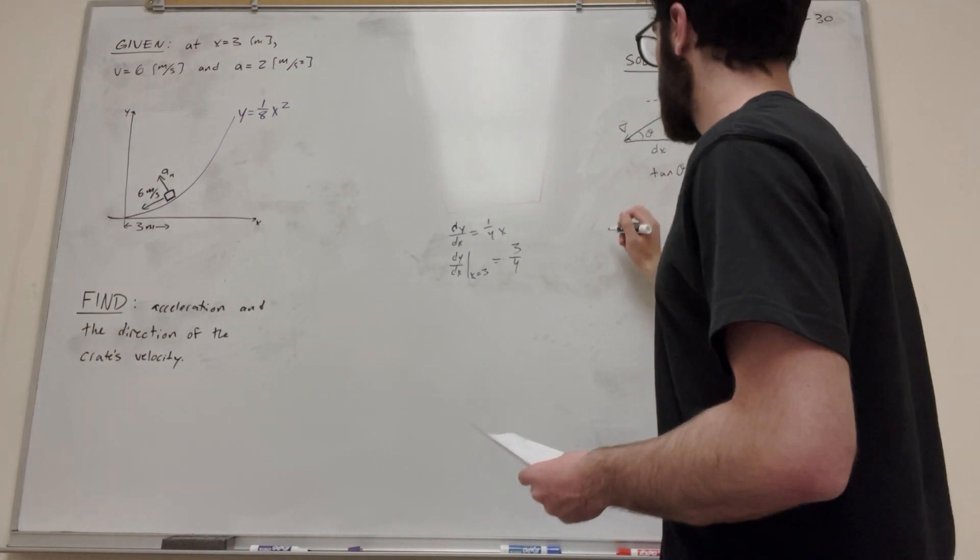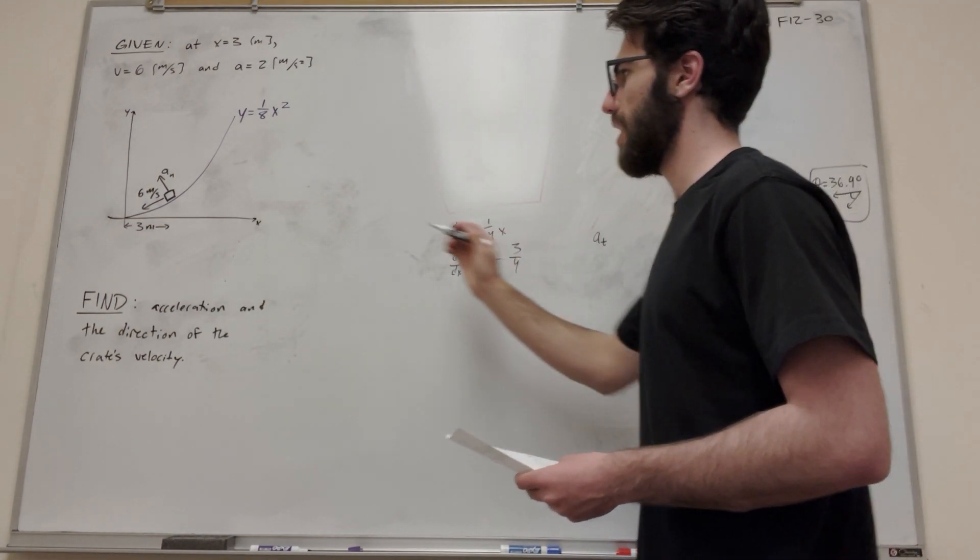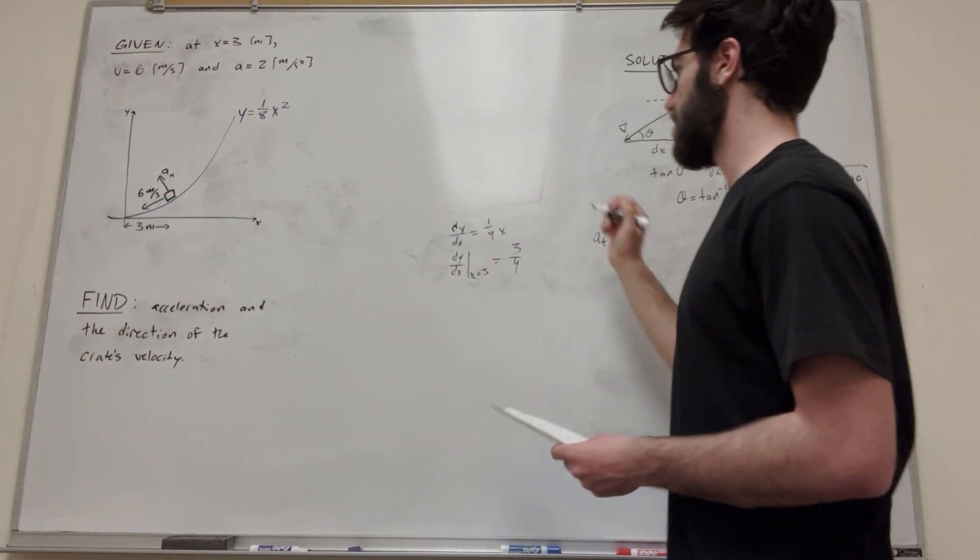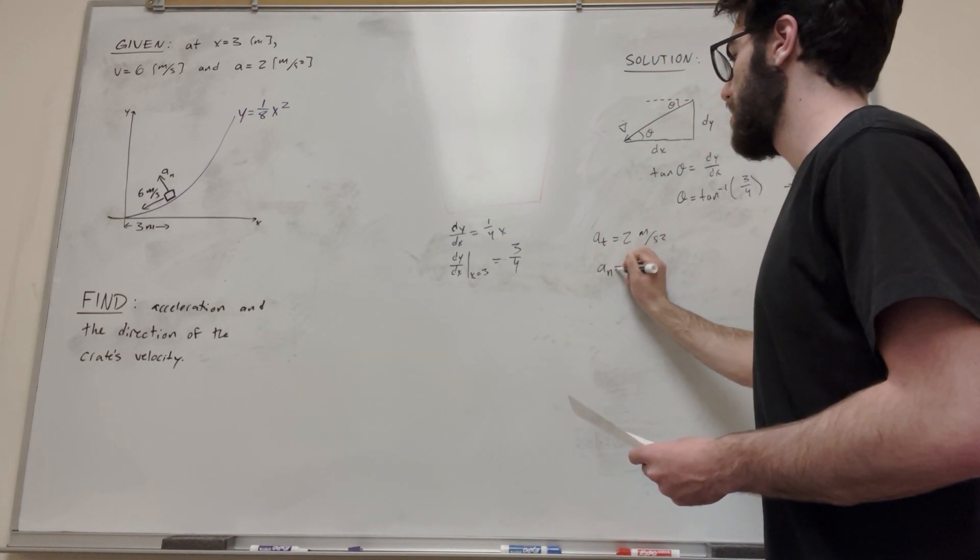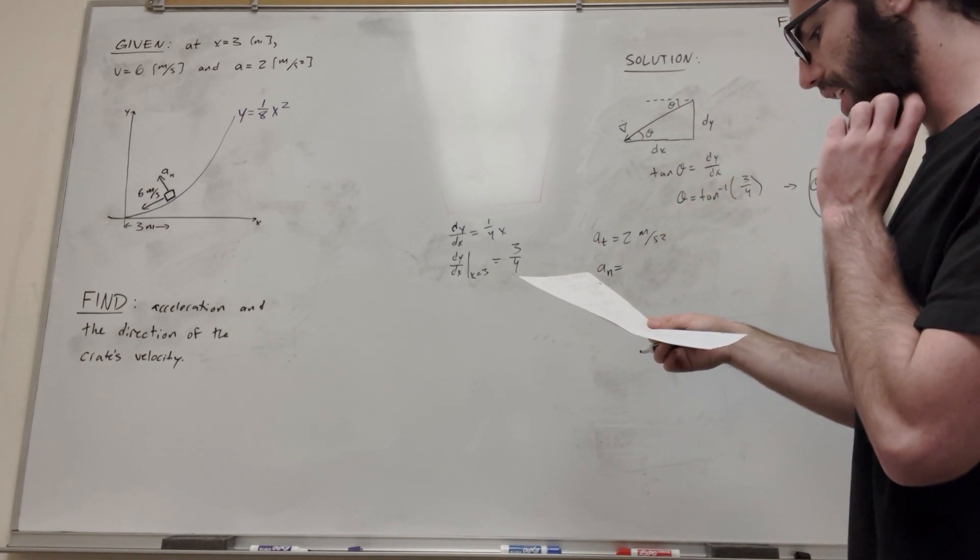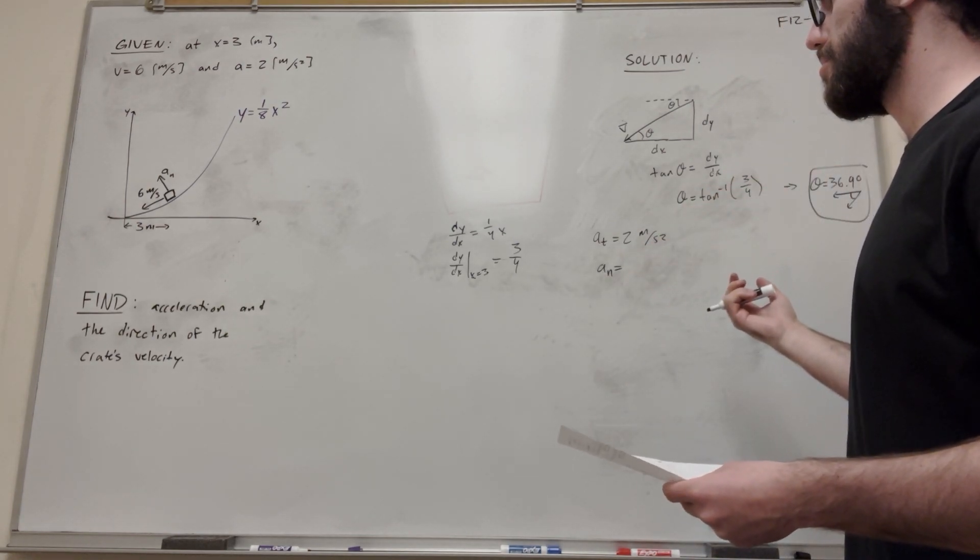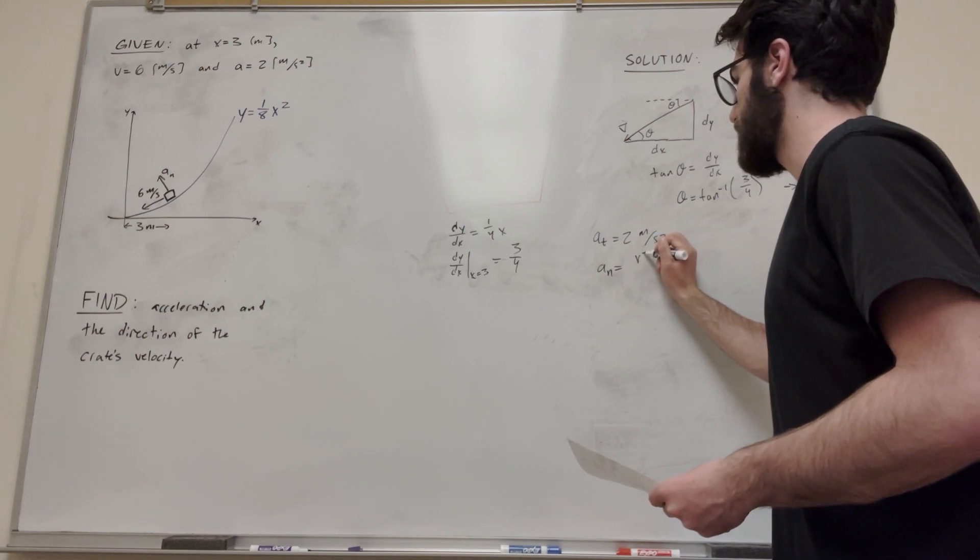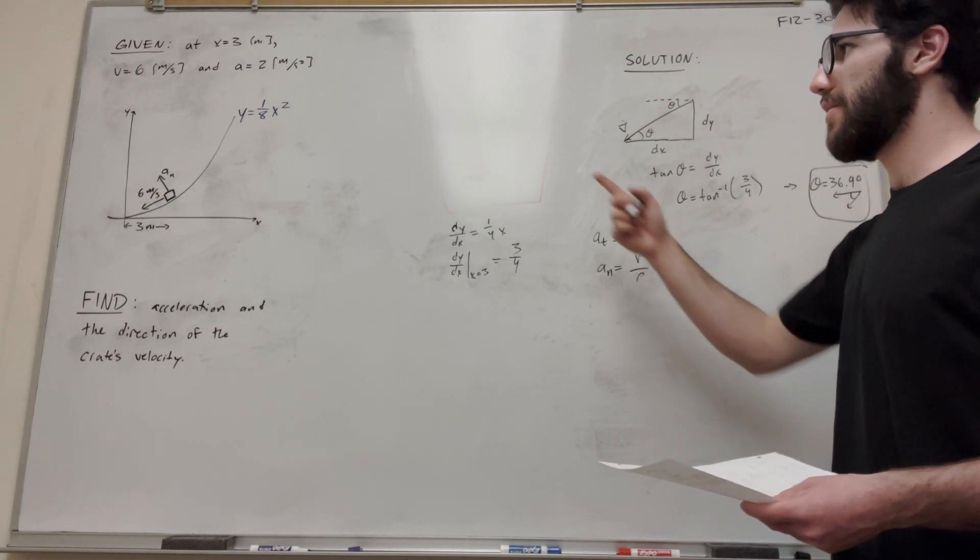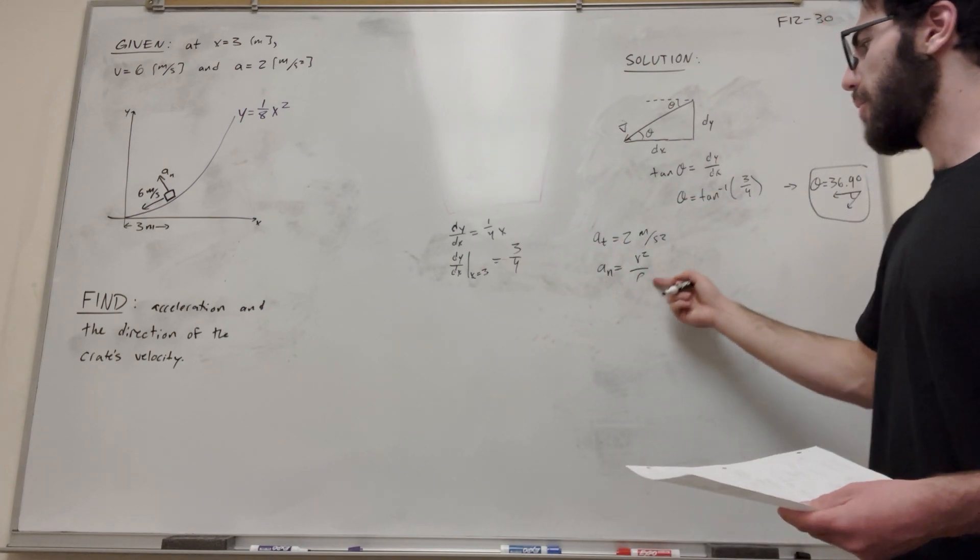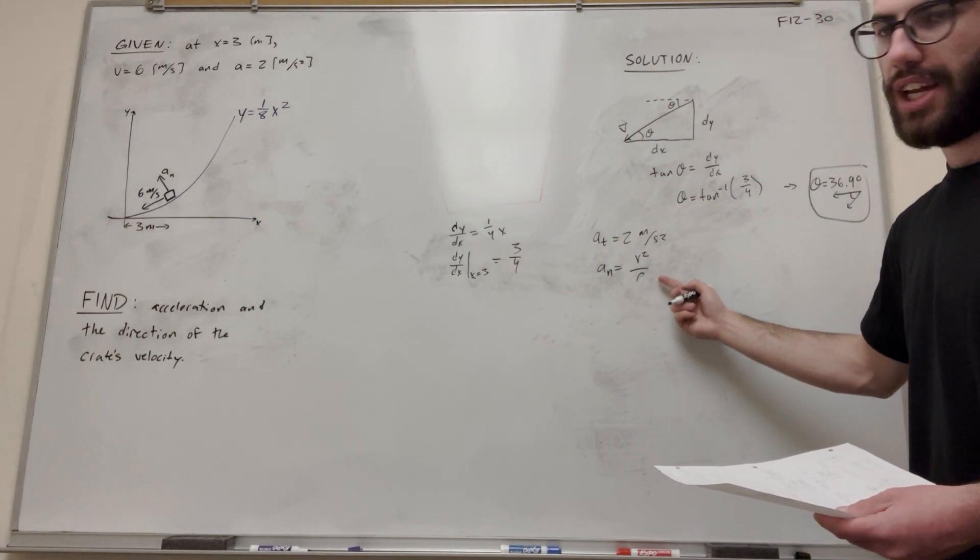So we know A tangent, which is that acceleration in this direction is just equal to 2 meters per second squared. Now we need to find the acceleration normal. A normal acceleration is an equation we can solve. It's going to be V squared over the radius of curvature. So velocity squared, we're given velocity is 6 meters a second, but we don't have radius of curvature yet, so that's what we need to solve for in this case.